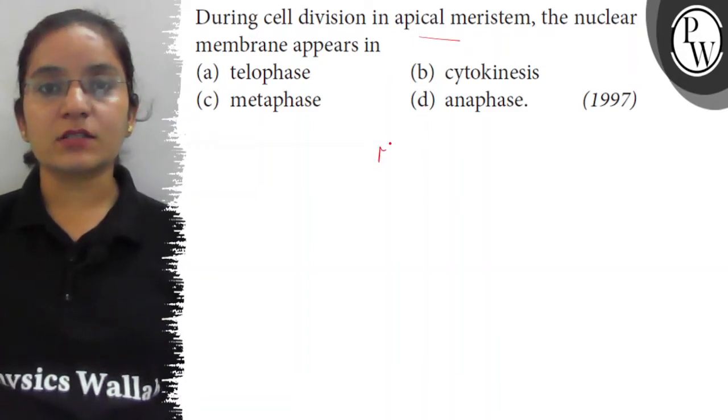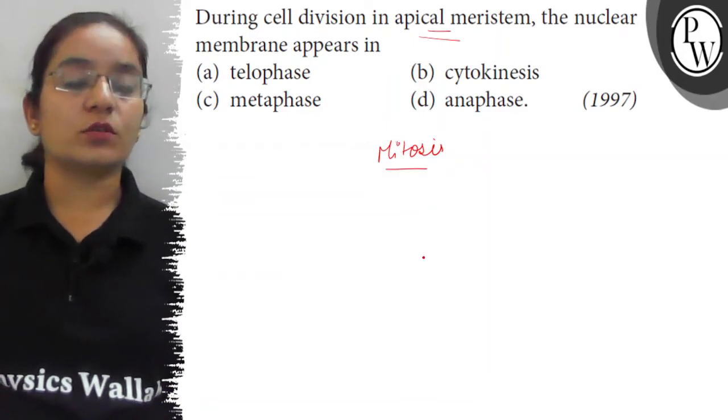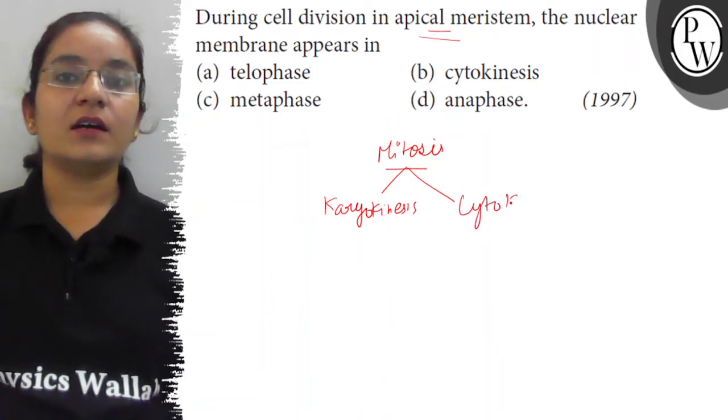Mitosis is the cell division that occurs in apical meristem, in meristematic tissue, for the growth of a plant. Mitosis is further divided as karyokinesis, that is division of nucleus, and then cytokinesis, that is division of cytoplasm.